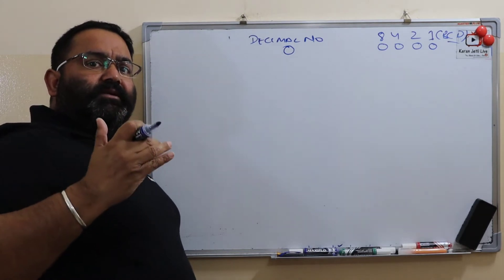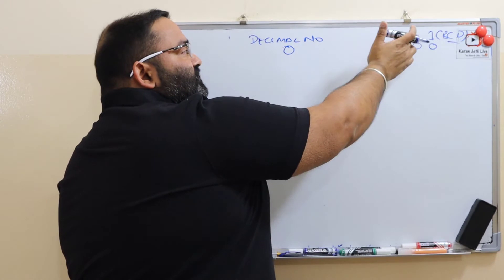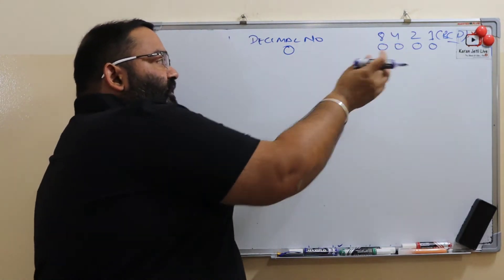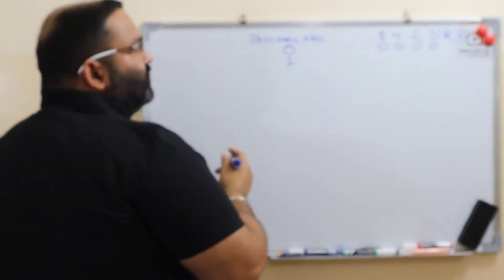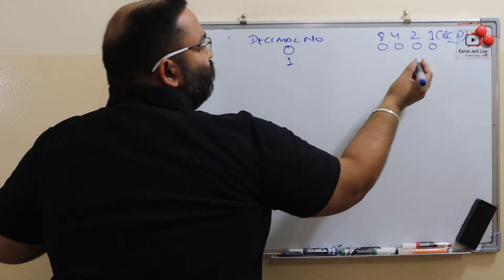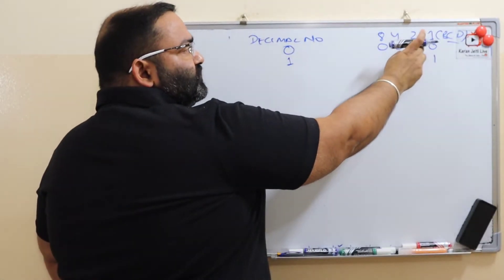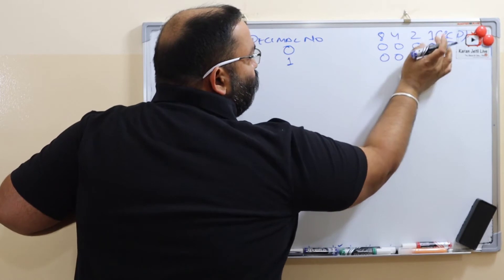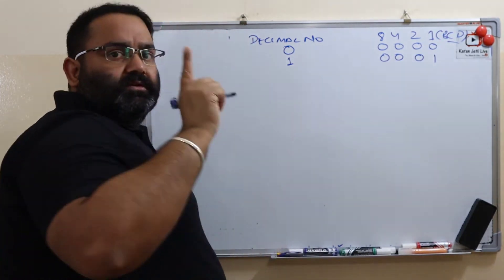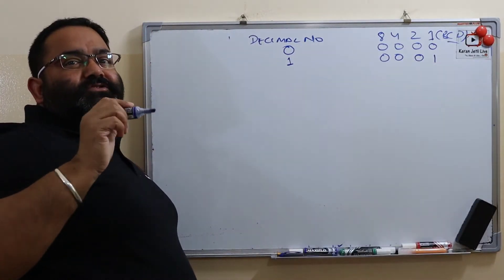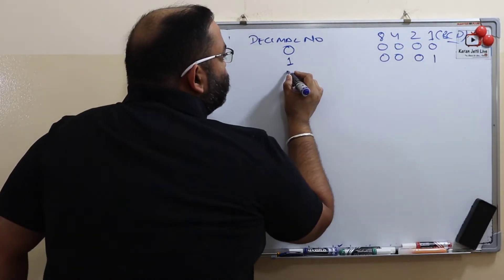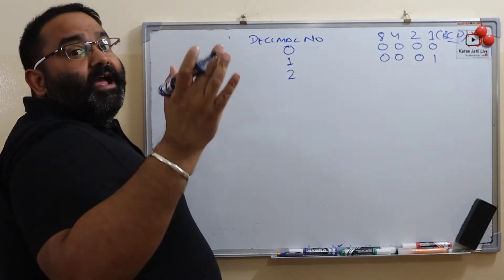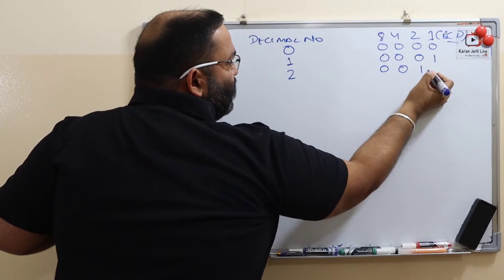Whatever decimal number we have, we have to see which of these numbers — as a single number or by adding them together — gives us that decimal number. For example, if we want 1: 1 is the sum of just 1, so 1 plus 0 plus 0 plus 0 equals 1. So 1 is represented in BCD as 0 0 0 1. For 2: 2 is already in 8421, so we do not need to add anything. We get 0 0 1 0.